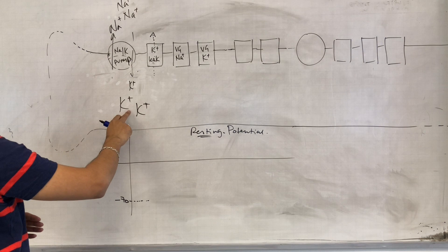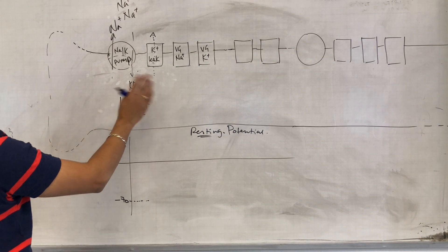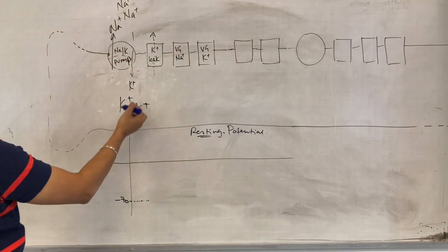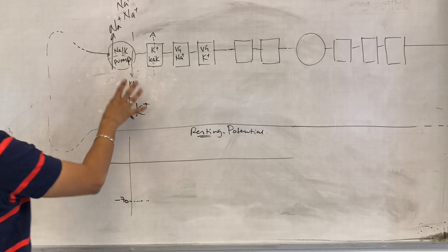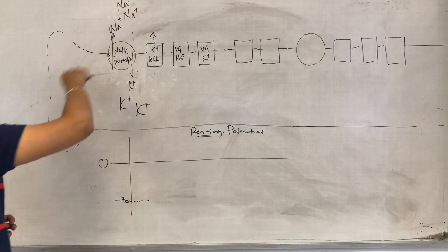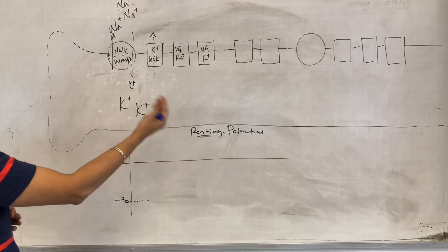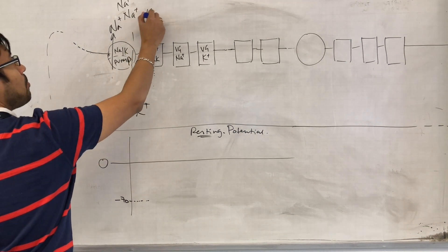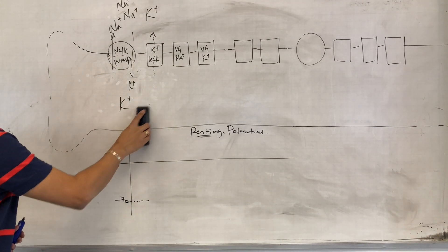And because they're open, potassium will diffuse down its concentration gradient. There's no electrical gradient because it's already positive outside, but there is loads of potassium inside the cell and hardly any potassium outside the cell, so there is a gigantic concentration gradient and potassium moves down that gradient. Some potassium ends up outside.